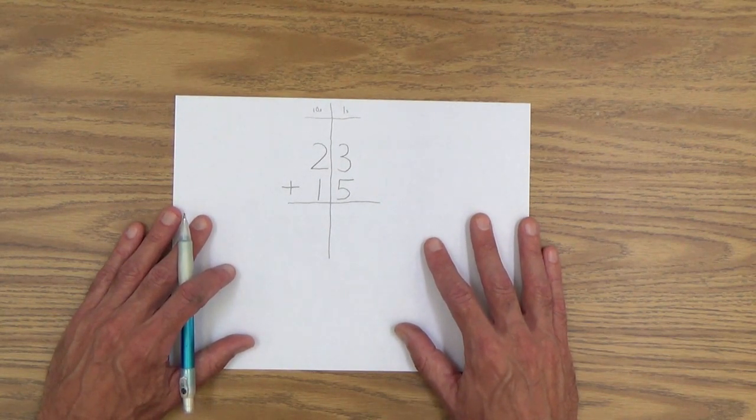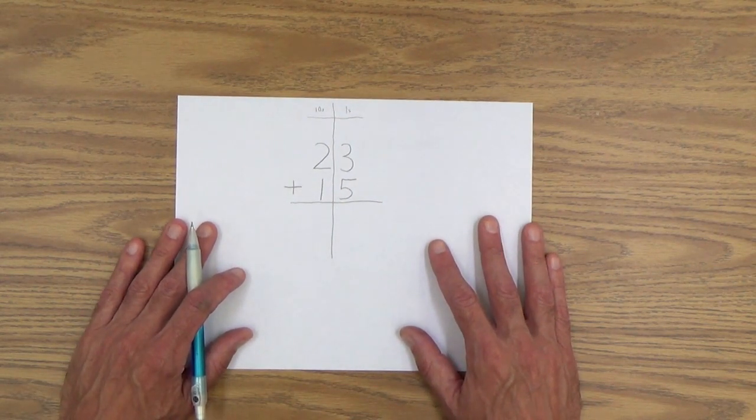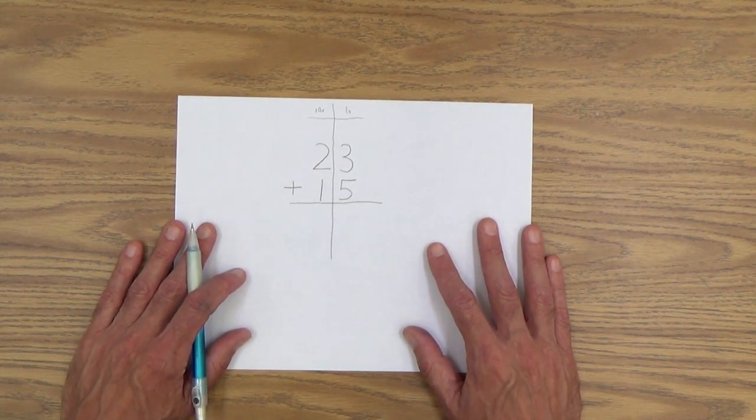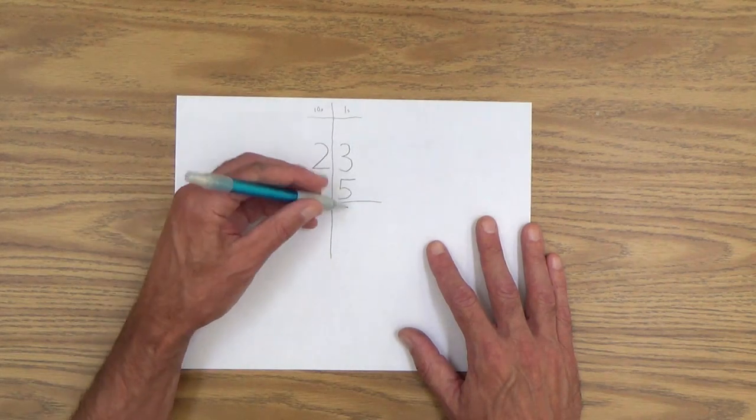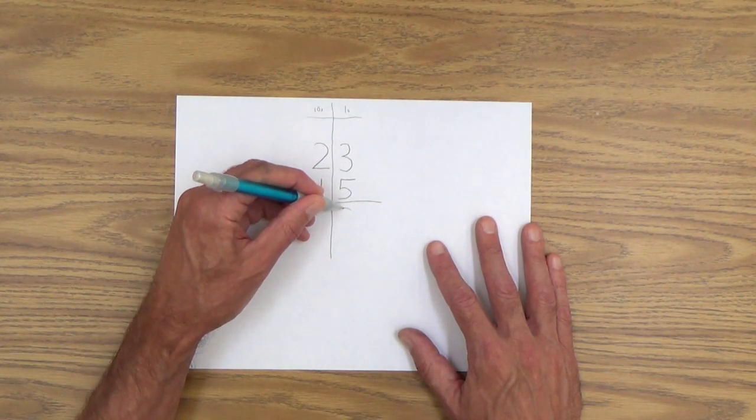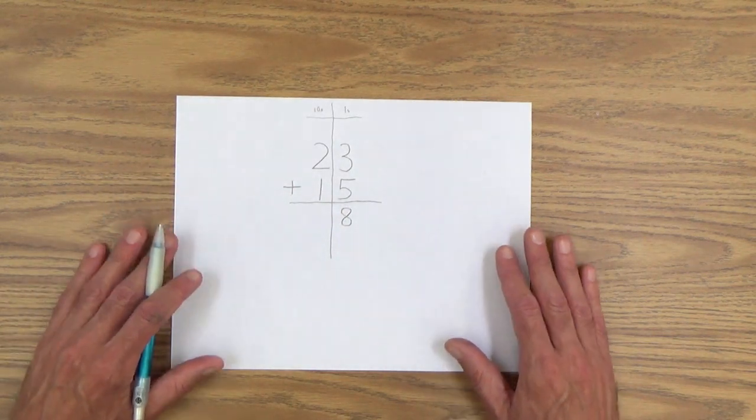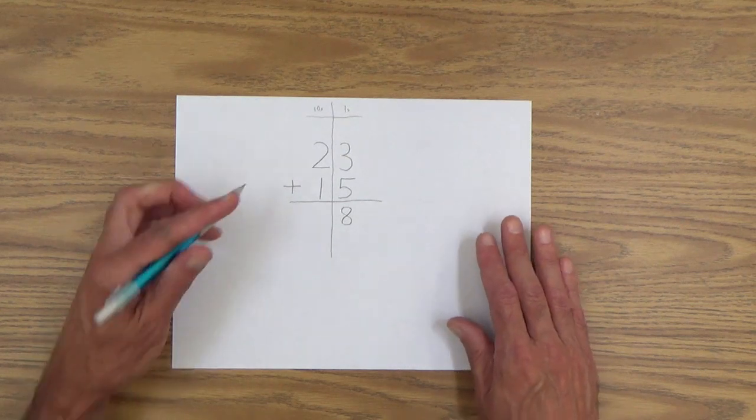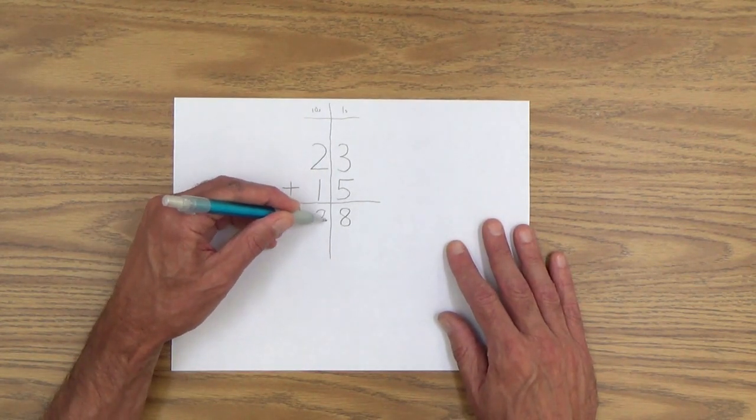So how would you approach this? I would approach it like this. I would say, well, let's add the numbers in the ones column first. And of course, that is three plus five equals eight. And then you might say, now let's add the numbers in the tens column. Two plus one equals three.